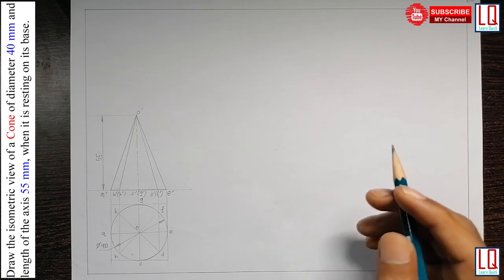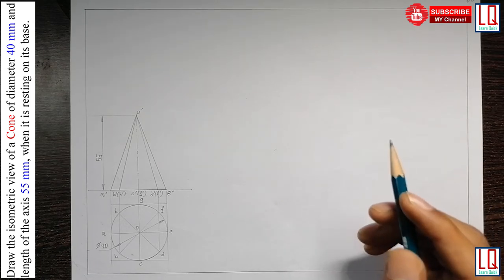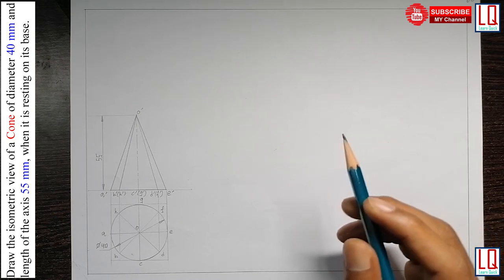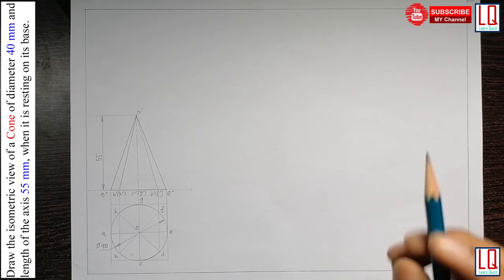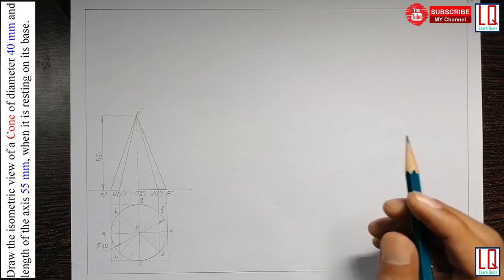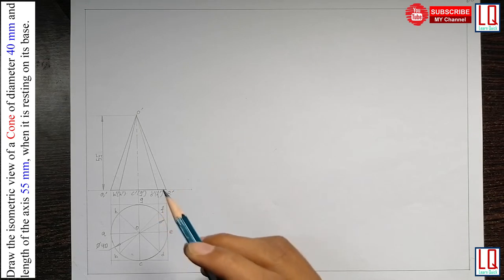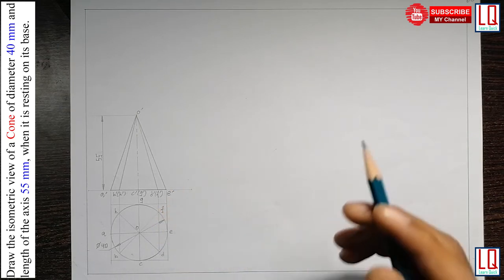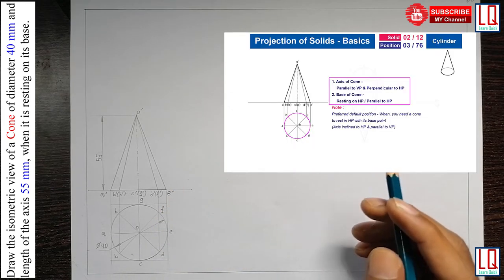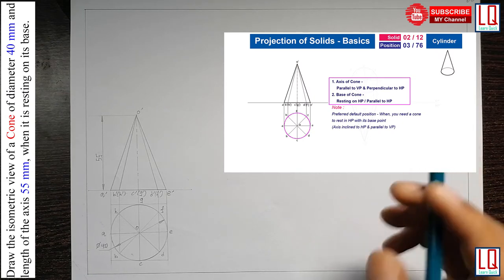Let's read the question. Draw the isometric view of a cone of diameter 40 mm and axis length 55 mm when it is resting on its base. I have already drawn the default orthographic projection of a cone on referring our previous video lecture projection of solids, solid type 2 and position type 3.